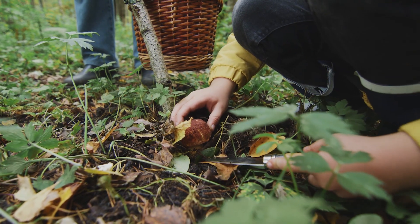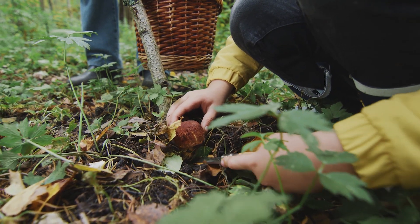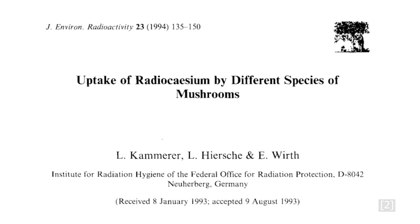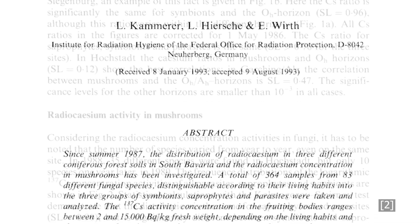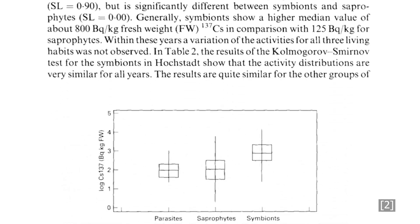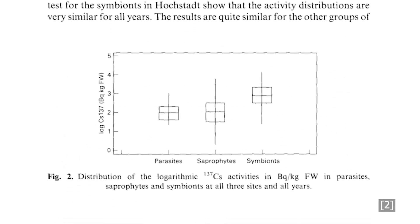Different mushroom types absorb nutrients differently. There are the saprophytes, which derive nutrients from dead organic matter; the parasites, which require a living host; and the symbionts, which live in symbiosis with another plant partner.